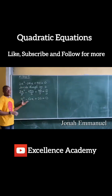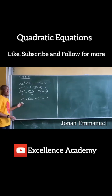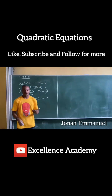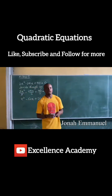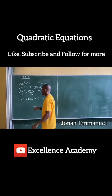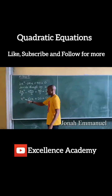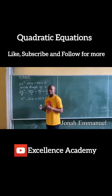So if you observe from this here, the coefficient of x squared is now unity — that's 1. So at this point, I can now factorize. The idea is this: before you use the factorization method for any quadratic equation, you must first ensure that the coefficient of x squared is unity before you use the factorization method.